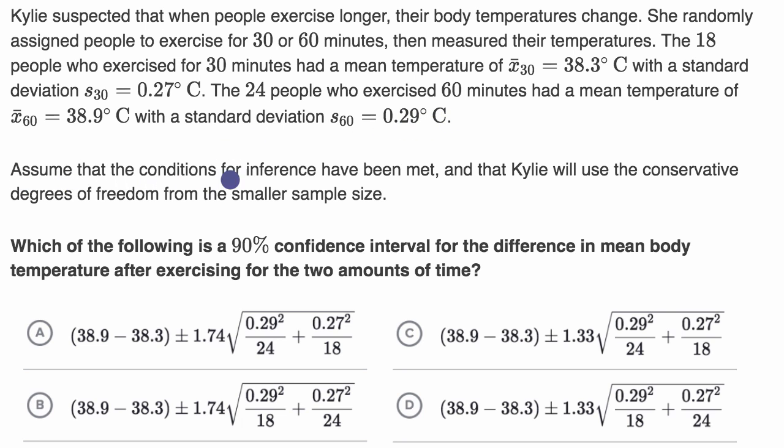Assume that the conditions for inference have been met and that Kylie will use the conservative degrees of freedom from the smaller sample size. Which of the following is a 90% confidence interval for the difference in mean body temperature after exercising for the two amounts of time?